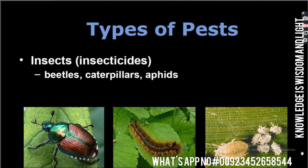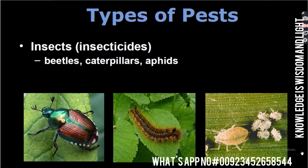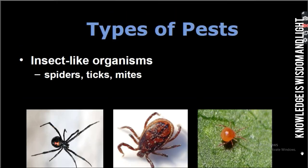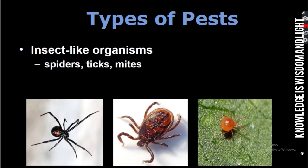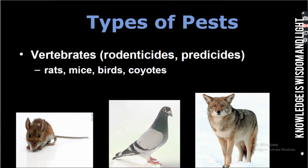Types of pests: insects such as beetles and caterpillars; insect-like organisms such as spiders and ticks; vertebrates such as rodents — rats, mice, birds, and coyotes.